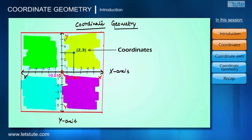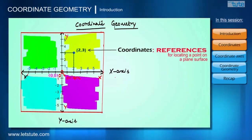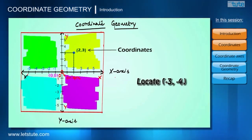Similarly, these coordinates are the references for locating a point on the plane. Suppose we are given with the coordinates (-3, -4) and we want to locate this point. We'll first take the X coordinate that is -3 and next value is -4 that is Y coordinate. Now we can see that they both are intersecting at this value, so this is (-3, -4). This is how coordinates work.